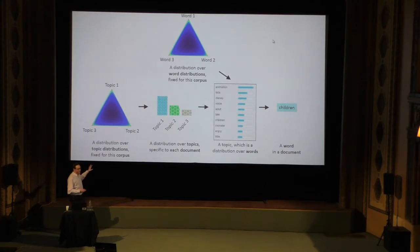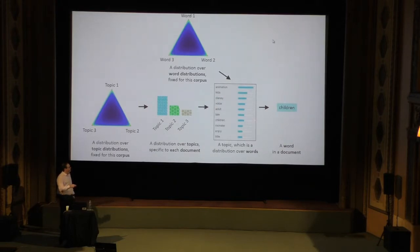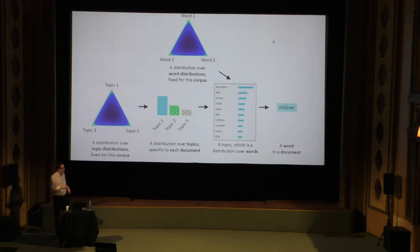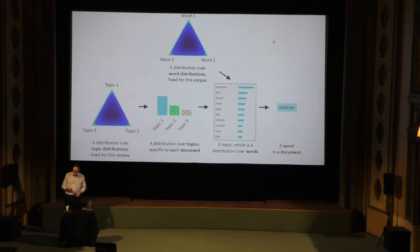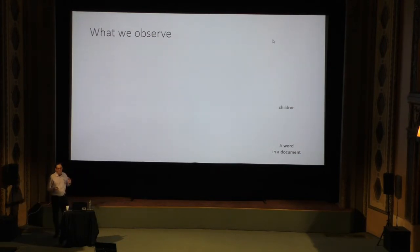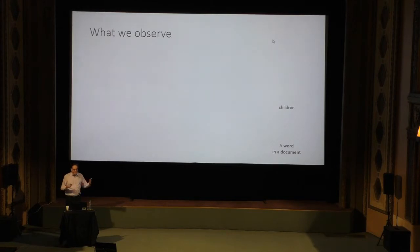Looking at this diagram, these two distributions really determine how the whole generative process works. What the algorithm tries to do is figure out what these two distributions look like. It iterates, trying to find the right settings for these distributions, until it gets something that matches the actual collection of documents we have. The only thing we actually observe is the words — everything else is hidden or latent. That's where we get the L in LDA.